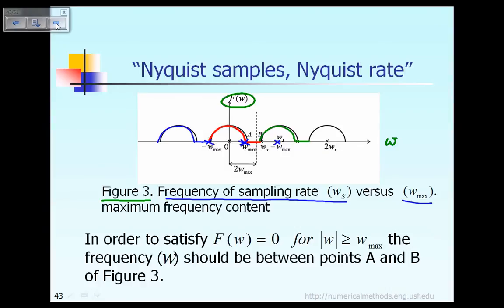If you want to satisfy that the function at the frequency omega must be equal to zero for frequency omega greater than W_max, you need to satisfy that. The reason is because if your frequency omega is bigger than omega max, that means you are in the range between A and B. For that range between A and B, the function value F should be equal to zero. So the function F should be equal to zero for the frequency W bigger than W_max. If that's to be satisfied,